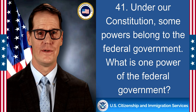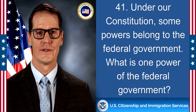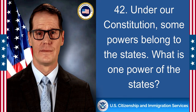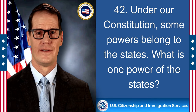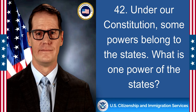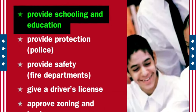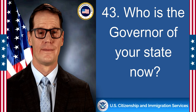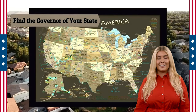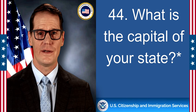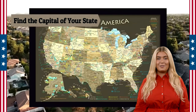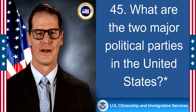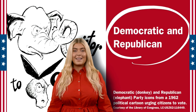Under our Constitution, some powers belong to the federal government. What is one power of the federal government? To print money. Under our Constitution, some powers belong to the states. What is one power of the states? Provide schooling and education. Who is the governor of your state now? Answers will vary — please see the link on this video. What is the capital of your state? Answers will vary — please see the link on this video. What are the two major political parties in the United States?